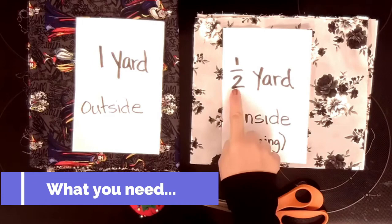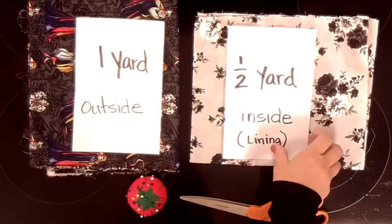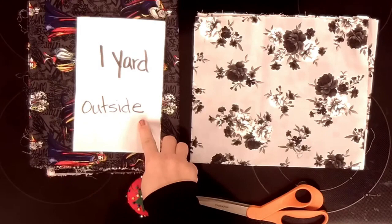The half-yard is for the inside of your bag, it's also called the lining, and the one-yard is for the outside of your bag.